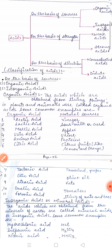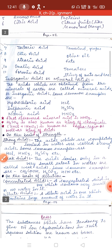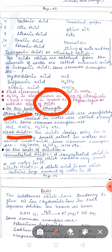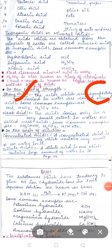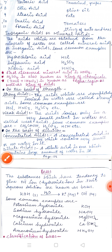On the basis of strength, acids are classified as strong and weak. Strong acids are those which are completely ionized in water, giving H⁺ ions easily. Weak acids are those which are only partially dissociated, releasing H⁺ ions in water to a small extent.